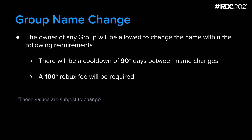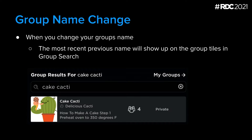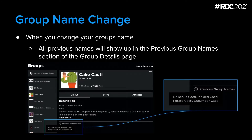The group owner will be the only one able to change the group name, much like any other high-level group information like the icon and description. We are introducing a cooldown between name changes as well as a fee to ensure that group name changes are mindful and minimize potential for abuse. Keep in mind that the values mentioned here are subject to change. The most recent previous name will show up in group search, right under the group's current name. All previous names will be visible on the group details page when you hover over the tooltip on desktop or tap the button on mobile — you may recognize this from how we show previous user names on the profile page.